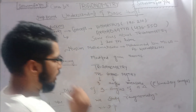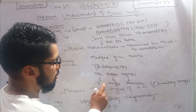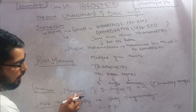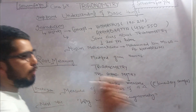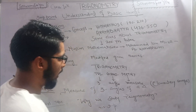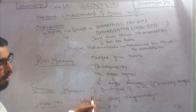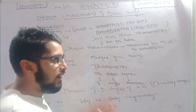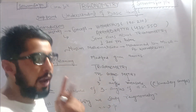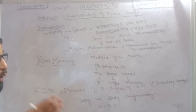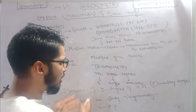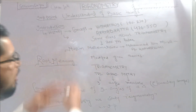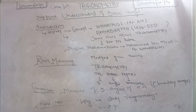Keeping in mind the standard of 10th class: trigonometry means 'three angle measure.' If I arrange these three words in a good sequence — 'measure three angles' — and modify the sentence, it becomes 'measurement of three angles of a triangle.' So this is nothing but actually the elementary definition of trigonometry: it is the measurement of three angles of a triangle.